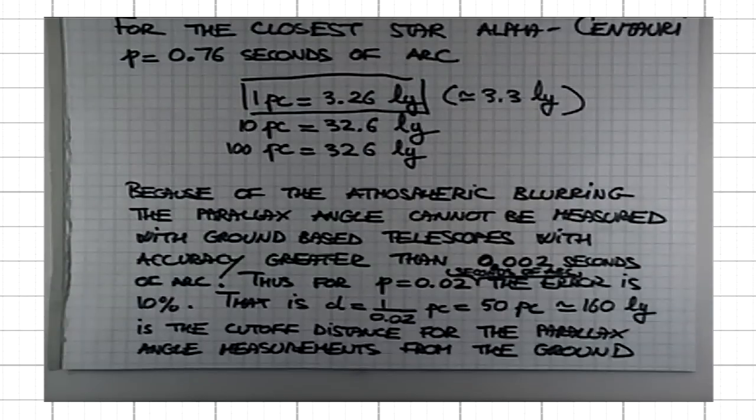From the ground, the distances were measured to about 10,000 stars with reasonable accuracy.